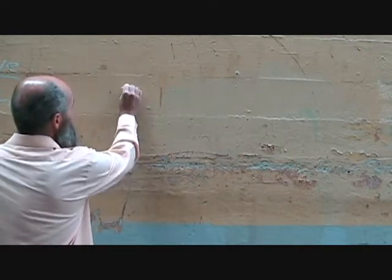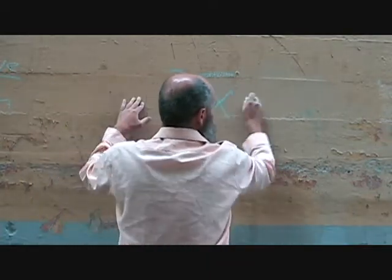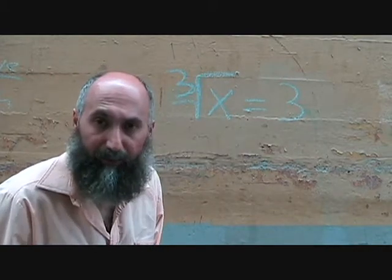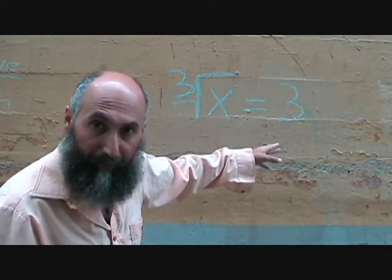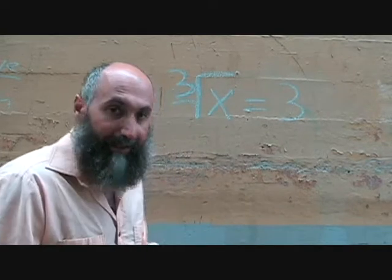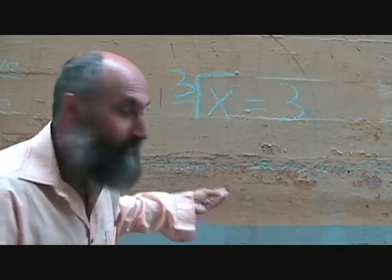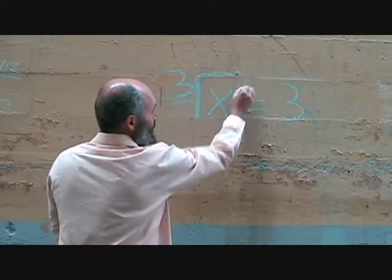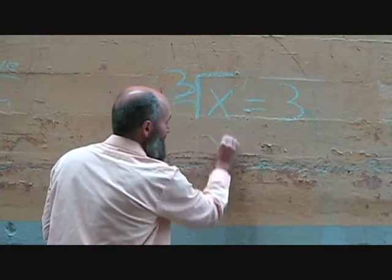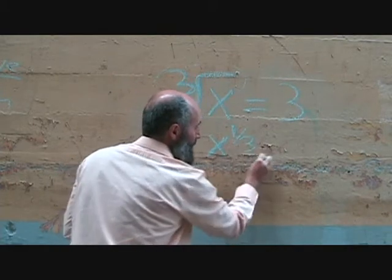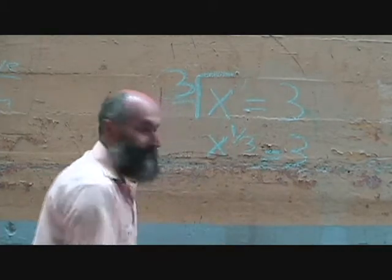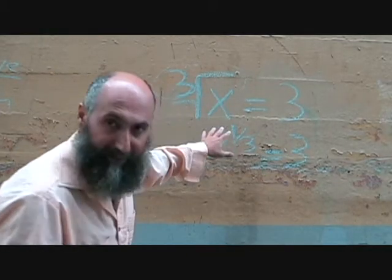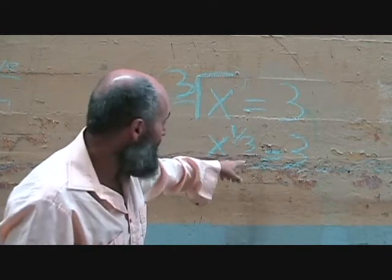Let's do a single radical and see what we do to isolate the variable. Let's say you had the cube root of x is equal to 3, and again you want to get x by itself. The simplest way to handle radicals is to change them to powers — to an exponent. So you grab the 3, bring it to the denominator of the power, and this becomes x to the power of 1 third is equal to 3. You haven't reduced anything; you've just rewritten the radical as a power.